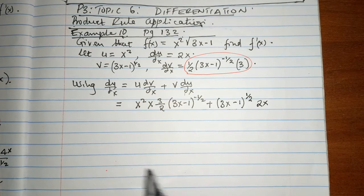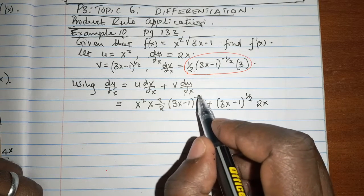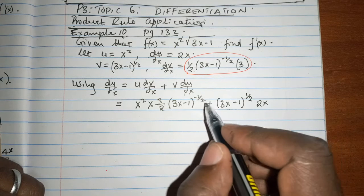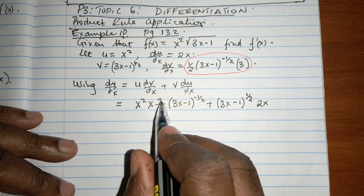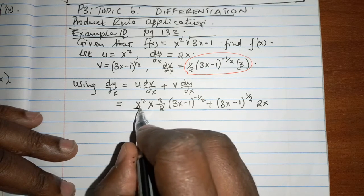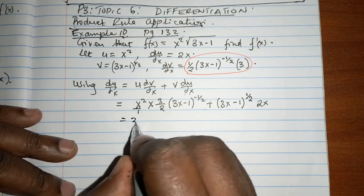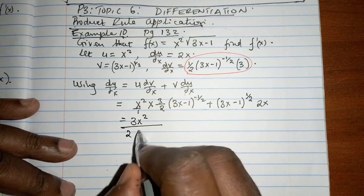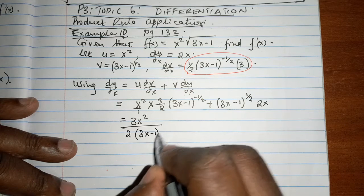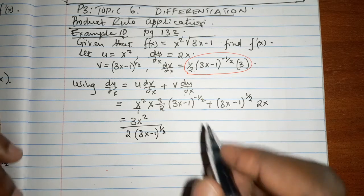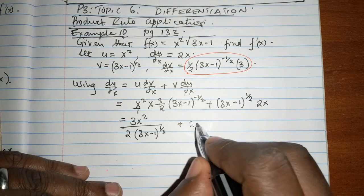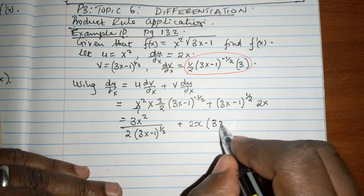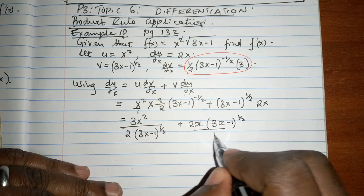When we clean this up, the term with the negative index moves to the denominator where the power becomes positive. So the first term becomes 3x² over 2 times (3x - 1) raised to the power of one half in the denominator, and the second term is 2x multiplied by (3x - 1) raised to the power of one half over 1.